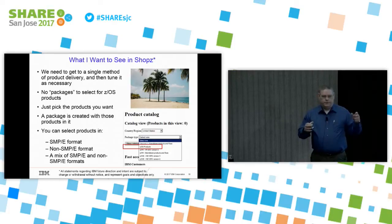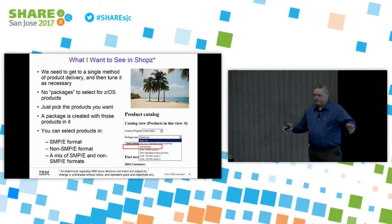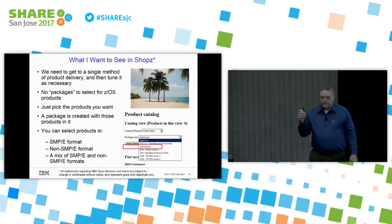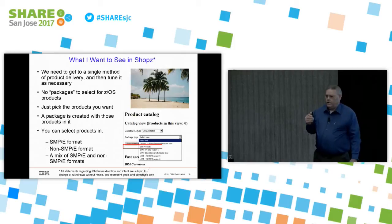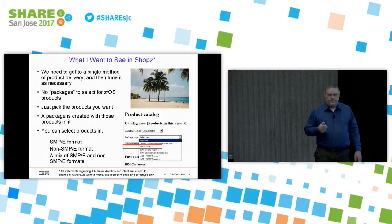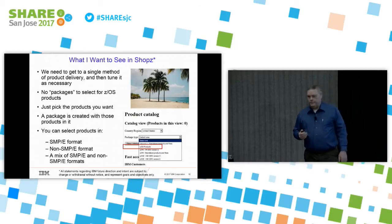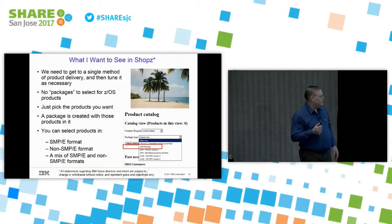So here's where we want to be — this is my wish list. IBM's wish is to have one way to order things. When you go into ShopZ, what you'll see is a dropdown that has ZOS, telling you what platform you're interested in. When you select that platform, you can pick whatever products you want that we have available for it. No more choosing between ServerPak and PDO and standalone and whatever else might be available. You can select products that are in SMPE format, non-SMPE format, or a mix.